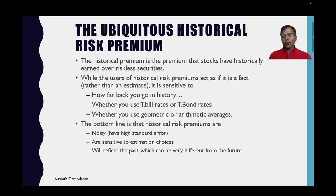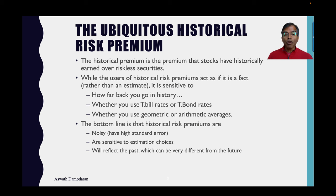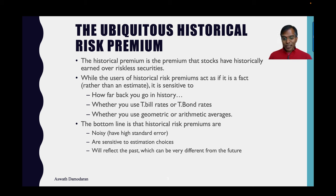Most people, when they compute the equity risk premium, look backwards — they compute a historical equity risk premium. There's another dataset of mine where I report the historical risk premium for U.S. equities. The historical risk premium is the premium that you'd have earned in stocks over and above a risk-free rate in a past time period — the last 10 years, the last 50 years, the last 100 years. But that choice of how far back you go, whether you use short-term or long-term rates, T-bills or T-bonds, and even how you compute the average can make a difference in how much the historical equity risk premium can be.